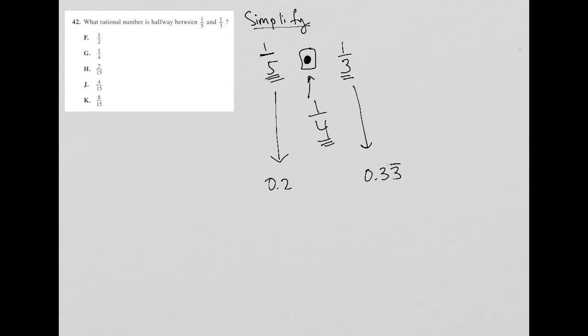So then the value that I want, that's right in between, I can actually figure out. Because it should be halfway... well, let's just do the math. 0.33 minus 0.2 is equal to 0.13.